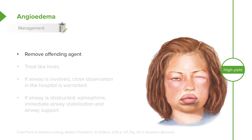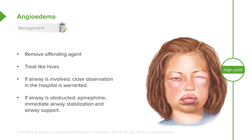If we have a patient with angioedema, first remove the offending agent — get them off the drug that caused it. Then we treat it similarly to hives: give diphenhydramine around the clock and possibly add ranitidine. If the airway is involved, we generally admit these patients to the hospital to make sure the airway isn't going to become compromised. If the airway is obstructed, we immediately give epinephrine and provide immediate airway stabilization and support. It may require intubation and, in very rare cases, an actual tracheostomy if intubation is not possible. Sometimes a laryngoscopic intubation is needed.